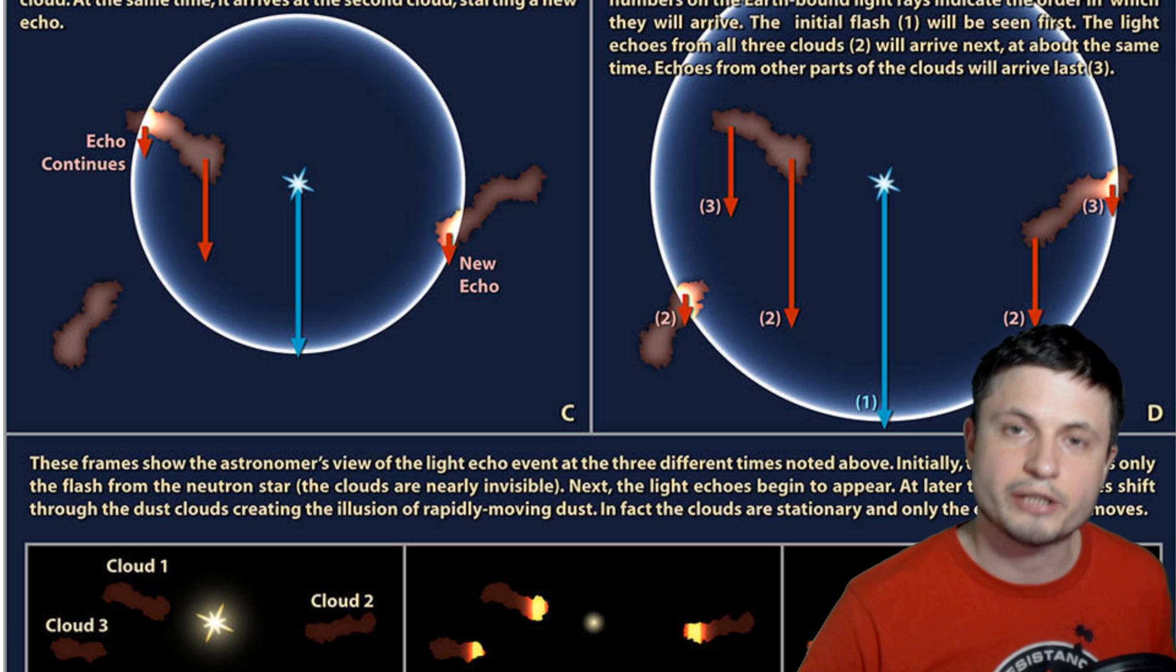And one of the best examples was actually, once again, from 60 Symbols, who explained it as a really simple example using a laser pointer and the moon. If you were to take a laser pointer and if you were to shine it across the surface of the moon, it would actually appear as if the laser pointer can technically move faster than the speed of light.